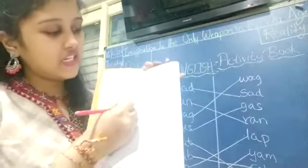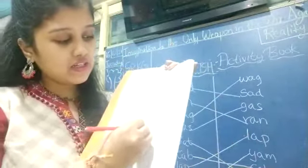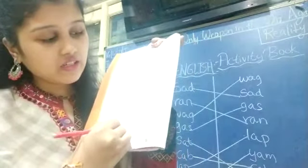Now gas. You have to match like this. Then sat. S-A-T sat. C-A-B cab. You have to match words like this. Lap. L-A-P lap. Y-A-M yam.